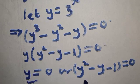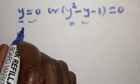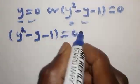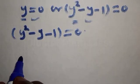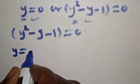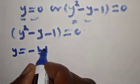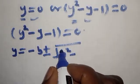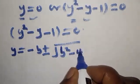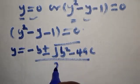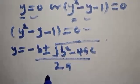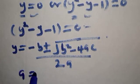We consider each case. For the quadratic y squared minus y minus 1 equals zero, we apply the quadratic formula: y equals negative b plus or minus the square root of b squared minus 4ac, all over 2a.